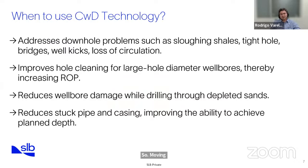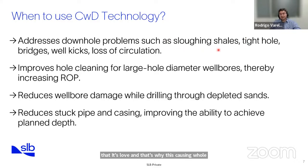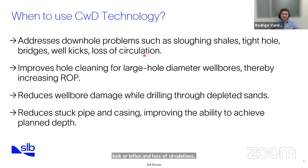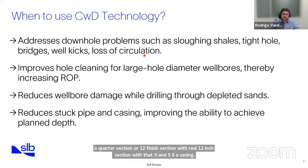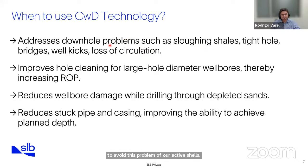Moving to when to use casing while drilling technology — casing drilling is a very good technology to address problems in the hole such as sloughing shales, reactive shales causing hole instability, tight holes, some breaches, well kicks or influx, and loss of circulation. Basically in KSA, we run casing drilling in the 12¼-inch section, drilling with 9⅝-inch casing. We have a combination of reactive shales and total losses. That's why in Saudi Arabia we drill the 12¼-inch section with casing while drilling to avoid the problems of reactive shales plus loss of circulation.